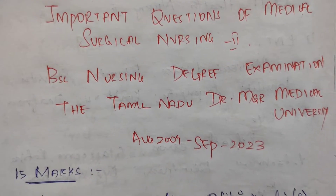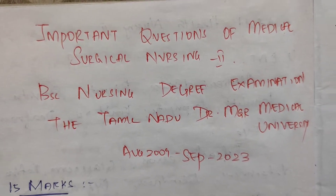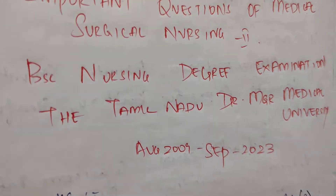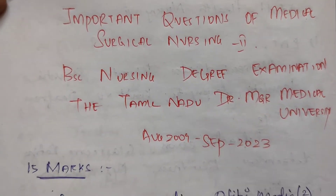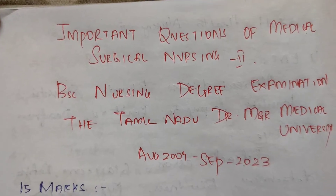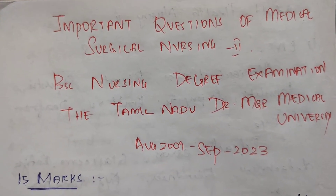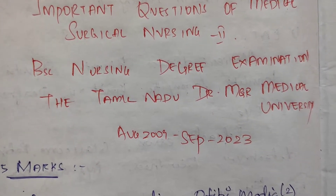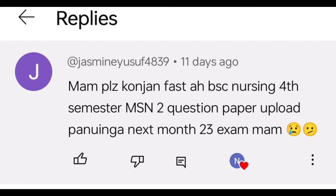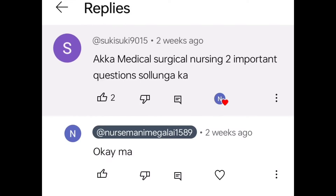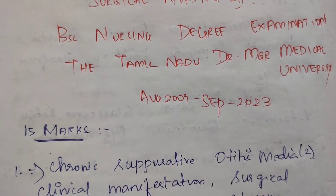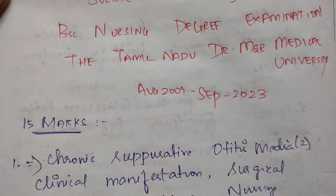Hi, now we are going to talk about the important questions of medical surgical nursing — adult health nursing second paper. This is a revised edition for B.Sc. nursing degree examination students, covering questions from August 2009 to September 2023.